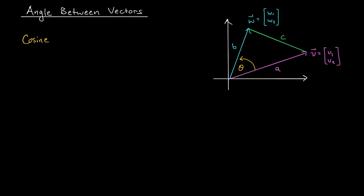Now from our cosine law, we know that C squared, C is the side opposite angle theta, is equal to A squared plus B squared minus 2AB cos theta. But hold on,